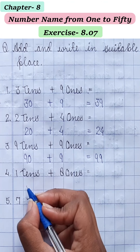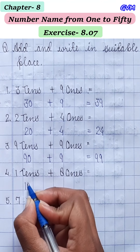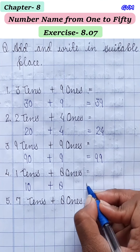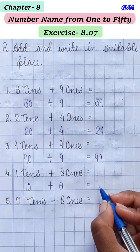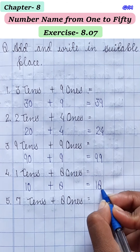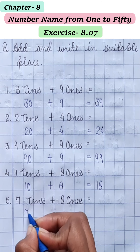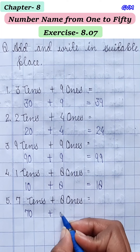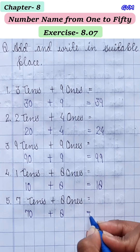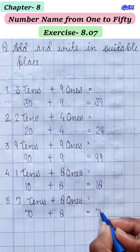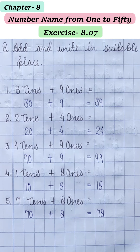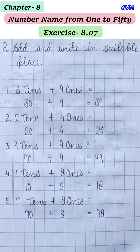Fourth: 1 10s means 10, plus 8 1s means 8, is equal to 18। Fifth: 7 10s means 70, plus 8 1s means 8, is equal to 78। तो इस तरह से हमारी exercise solve हो गई। इससे related exercise आपकी screen पर दिखाई देगी और वो आपको अपनी notebook में solve करनी है।